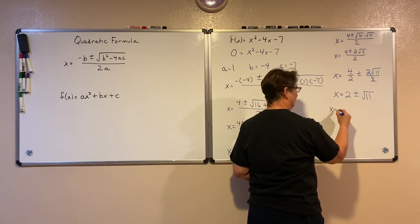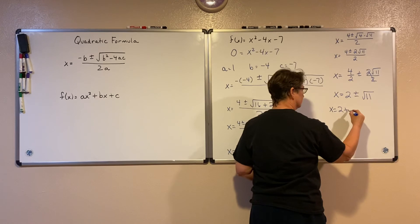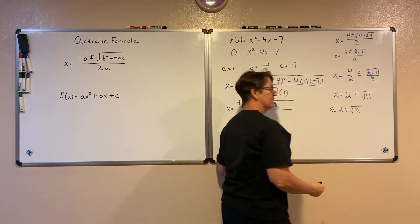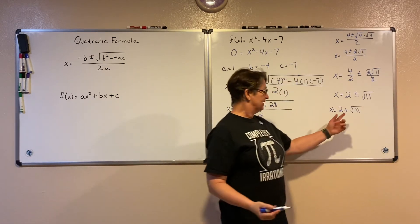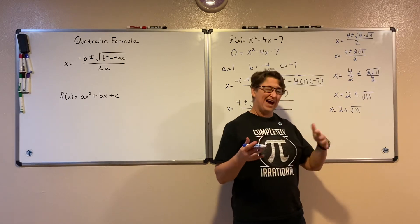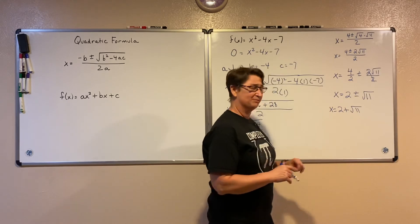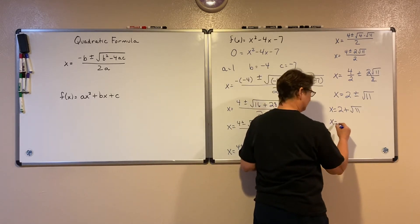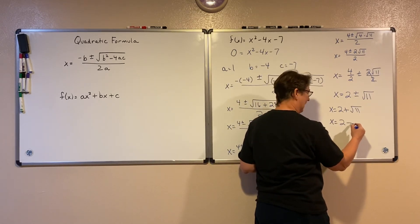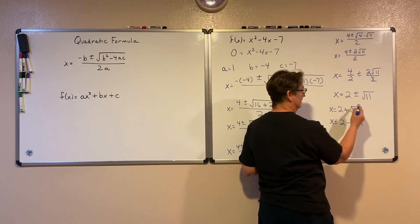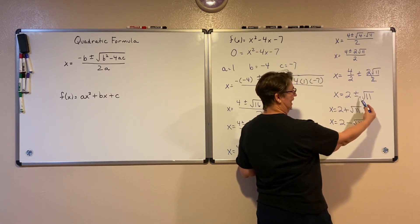X is equal to 2 plus the square root of 11. In a former video, we looked at that the square root of 11 is about 3 and a little bit, so you know this is about 5 and a little bit. And then here, 2 minus the square root of 11 is the other one. That's what this plus or minus means.